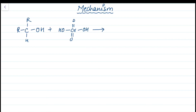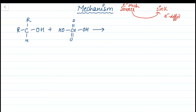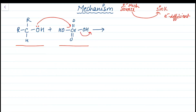Let us look at the mechanism of this reaction. One key concept: always identify the source and sink — electrons move from the electron-rich species (source) to the electron-deficient species (sink). In the alcohol, oxygen has lone pairs and is electron-rich; it will attack chromium in chromic acid.